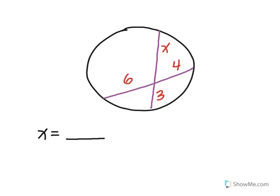Now on to some examples. In this example, we have two chords that intersect inside of a circle. The product of the segments of one chord equals the product of the segments of the other chord. The chord with segments 3 and X gives us 3 times X, which equals 6 times 4, the product of the other chord's segments. So 3X equals 24, meaning X equals 8.